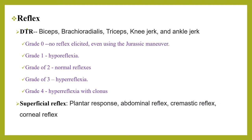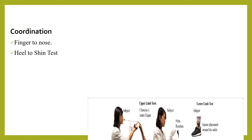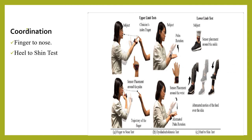Coordination tests include finger-to-nose, heel-to-shin, and pronation-supination tests. In the finger-to-nose test, the arm is fully stretched with the index finger flexed perpendicularly, eyes closed, and the patient repeatedly touches the examiner's finger and their own nose. In the heel-to-shin test, the heel of one leg is placed on the shin just below the knee of the stretched leg and moved down along the shin. The pronation-supination test involves alternately patting the knee with the palm and back of the hand as quickly as possible.